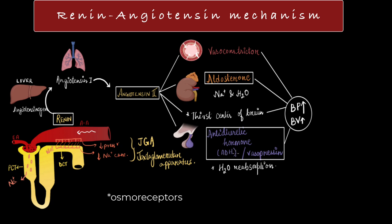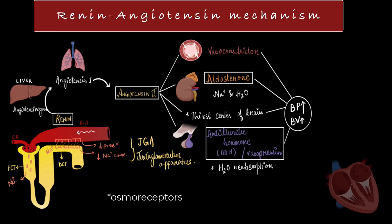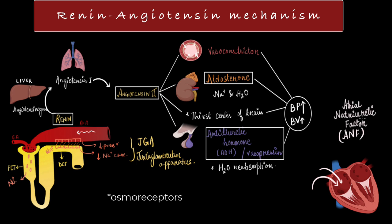Now one such regulatory effect is also expressed by the heart, the atrium of the heart. So when the pressure and volume of the blood in the body increases, more blood reaches the atrium of the heart. So when more blood enters the atrium, the wall of the atrium stretches, and in response to that stretch, it releases a hormone called the atrial natriuretic factor or ANF.